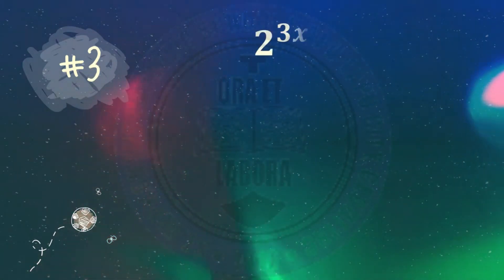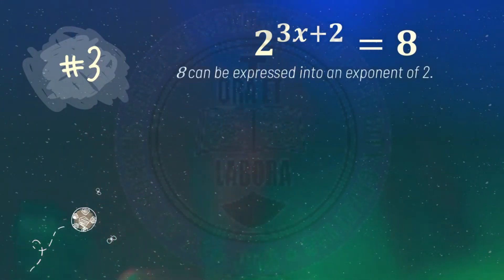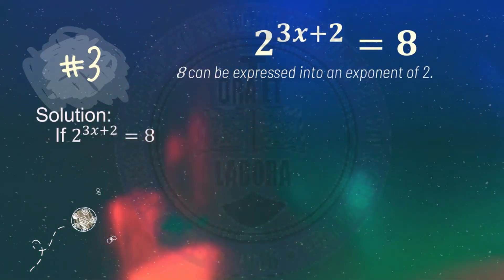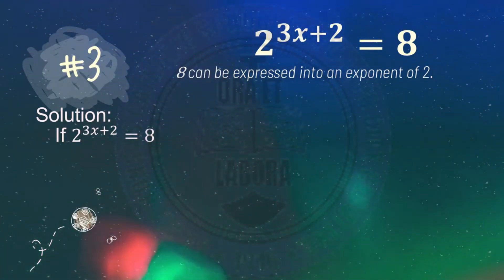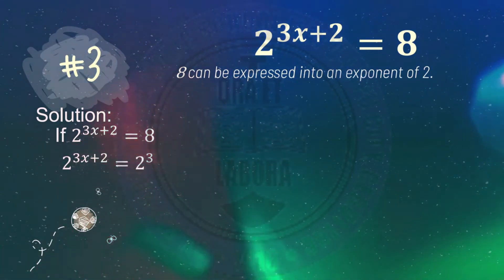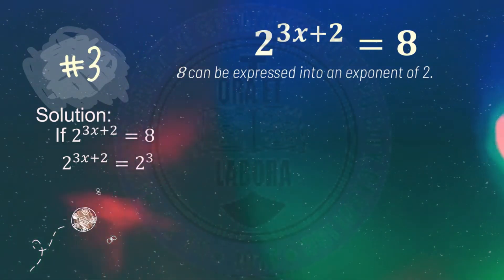Number 3: 2 raised to 3x plus 2 equals 8. Since 8 can be expressed as a power of 2, we need to make sure both sides share the same base. We transform 8 into its exponential form, which is 2 cubed. So 2 raised to 3x plus 2 equals 2 cubed.